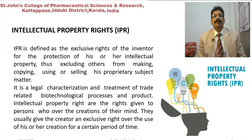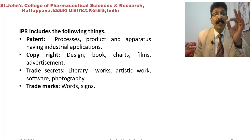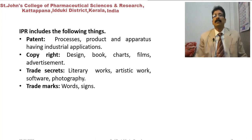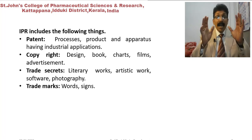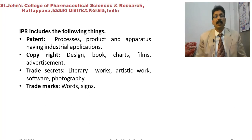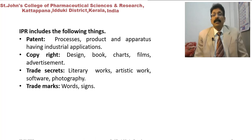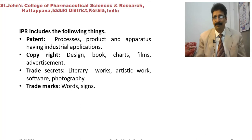Intellectual property rights includes the following things. First, patents — for a process, products, and apparatus having industrial applications. Next, copyright — which covers designs, books, charts, films, and advertisements.